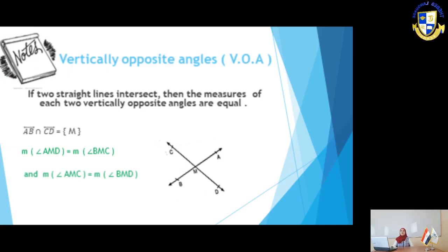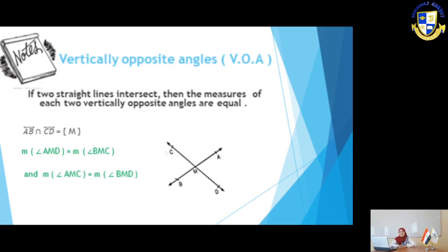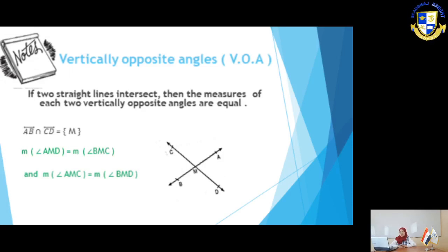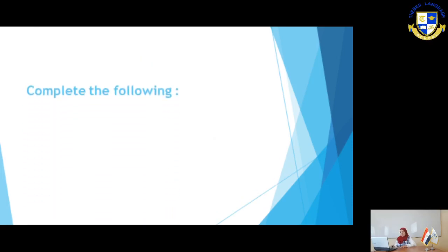So, if we have 2 straight lines intersecting at a point, then each pair of vertically opposite angles are equal in measure. Let's move to slide number 4.